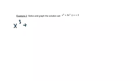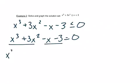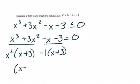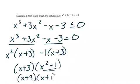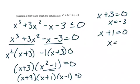Let's look at another one. Again, we need to start by getting everything onto the same side, so I'm going to subtract x and subtract 3. Then I want to solve this as if it was an equal sign. So I'm going to break it apart by grouping — here I'll pull out an x squared, which leaves me with x plus 3. Here I'm going to pull out a negative 1, which leaves me with x plus 3. That gives me x plus 3, and then x squared minus 1. This still factors, so I have x plus 3, x plus 1, x minus 1. I set each of those equal to 0, getting x equals negative 3, x equals negative 1, and x equals positive 1.